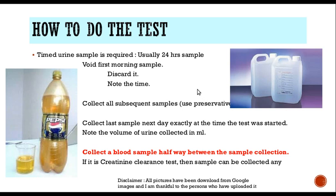Next day at 8 o'clock — or the time at which the study was started — the person is expected to void whatever urine is present. That is: discard the first sample, start collecting all the samples for the next 24 hours, and then next day at the same time when the test was started, whatever urine is there, pass that and collect it. Somewhere in between, collect a blood sample for testing also.